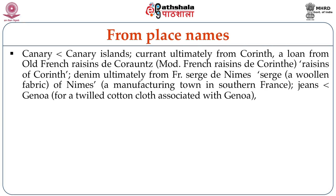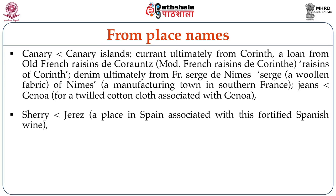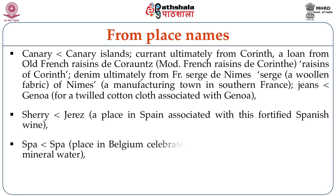From place names also we get new words. 'Canary' is from the Canary Islands. 'Currant' is ultimately from Corinth. 'Elan' comes from Old French. 'Jeans' comes from Genoa — a twill cotton cloth associated with Genoa. 'Sherry' comes from Xeres, a place in Spain associated with a fortified Spanish wine. 'Spa' is a place in Belgium celebrated for the curative properties of its mineral water.